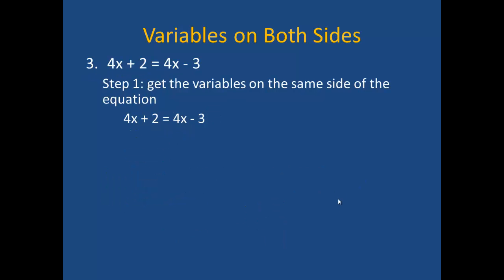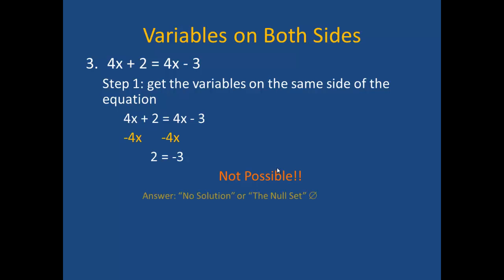In example number 3, I have the equation 4x plus 2 equals 4x minus 3. My first step is to get those variables on the same side of the equation, and I am going to do that by subtracting 4x from both sides. When I do that, you might notice that all the variables cancel out and I am left with 2 equals negative 3, which is not possible. So clearly that can't be the answer. When this happens, the answer is no solution or the null set.